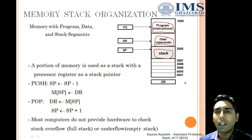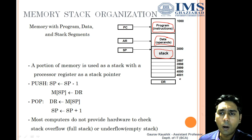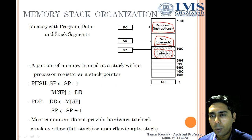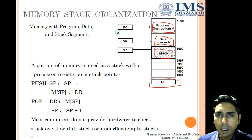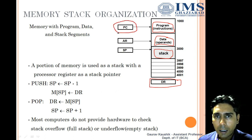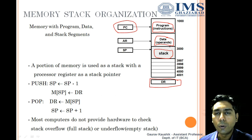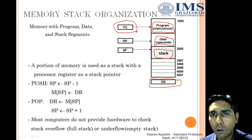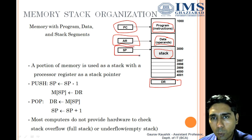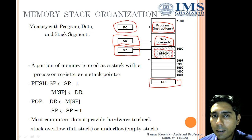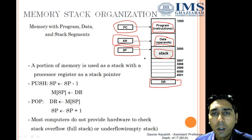DR is the data register, used to write or read data from the RAM. PC is the program counter, a special purpose register that holds the address of the next instruction to be executed. AR is the address register, which holds the address of the actual operand. SP, the stack pointer, is a special purpose register used to store the address of the top of the stack.